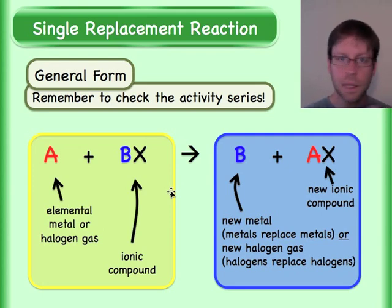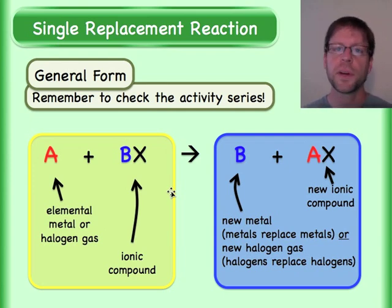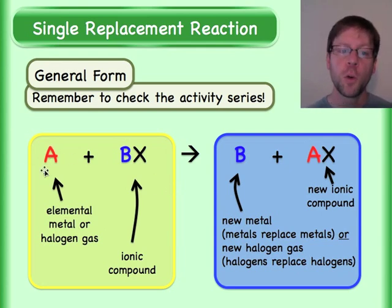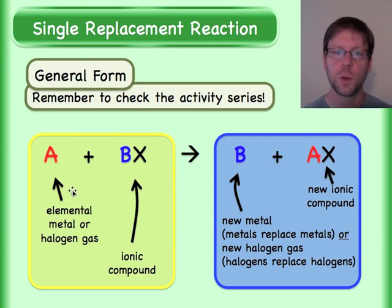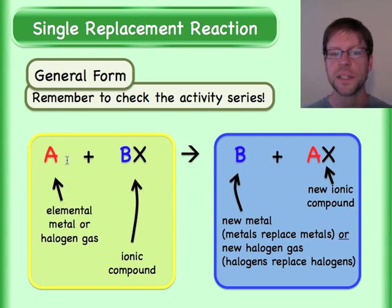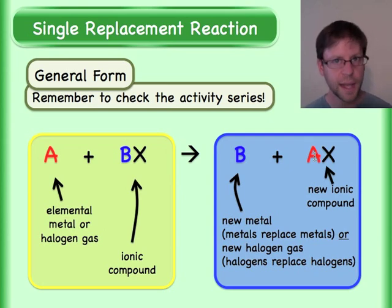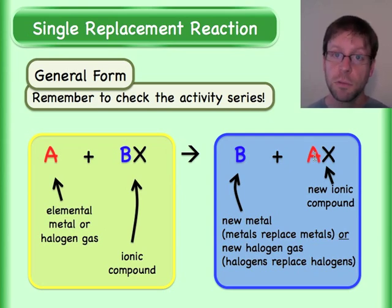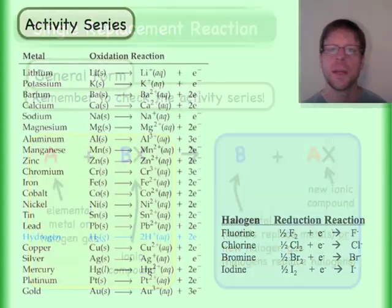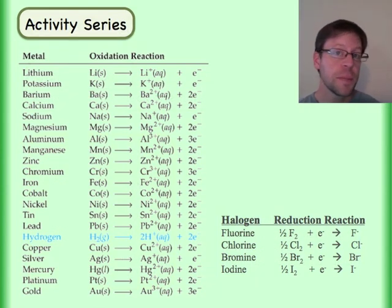The ionic compound is made up of some cation plus some anion in an appropriate empirical formula, and one of those things is going to get kicked out for the ion version of whatever that element was. Notice A displaced B — now A is partnered with X and B is on its own. This is a redox reaction; the electrons will have to transfer hands here.